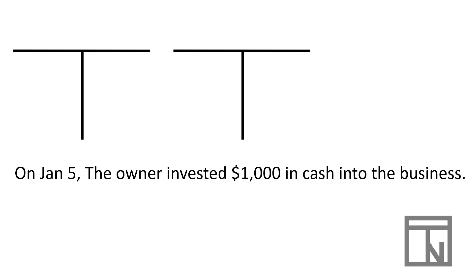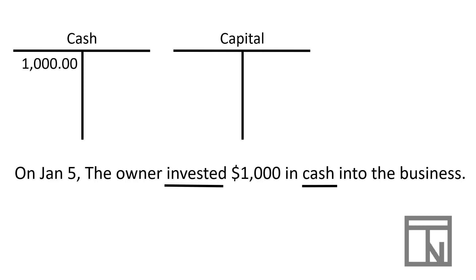Now that we've reviewed the steps to analyzing a transaction, let's walk through each of them and show how they flow into creating a journal entry. On January 5th, the owner of the company invested a thousand dollars in cash into the business. The two sides are that the owner invested and that there was cash, with accounts being Cash and Capital. Cash is increasing and when it increases it's a debit, so we debit cash for a thousand dollars. Capital is also increasing, so we credit capital for a thousand dollars.